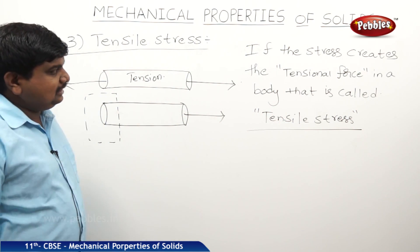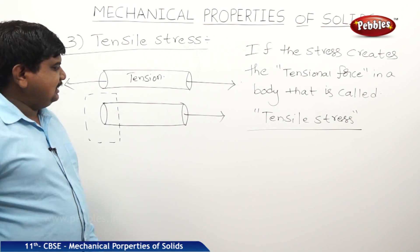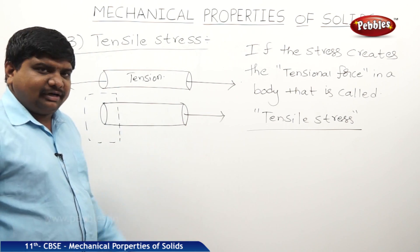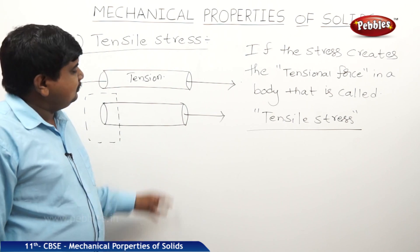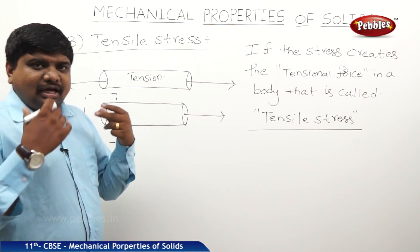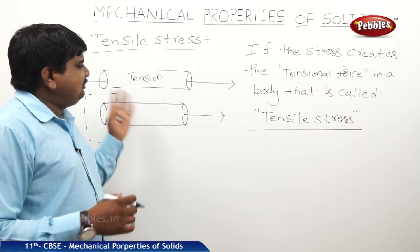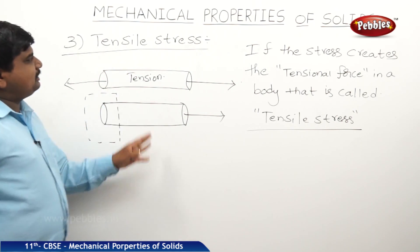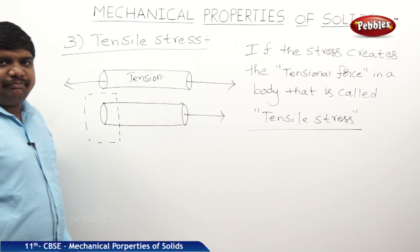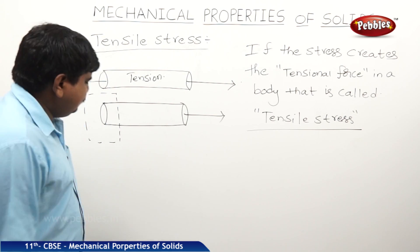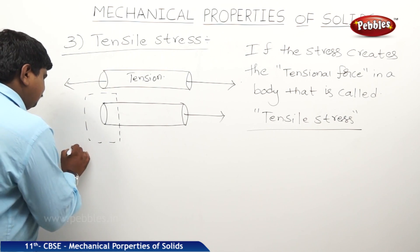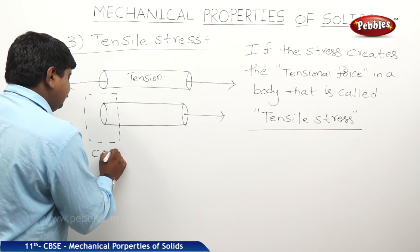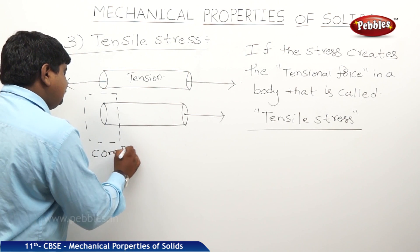Examples for tensile stress: a body which is fixed at one end and force applied on the other end, or a body with two opposite equal forces applied — those are the examples for tensile stress. The fourth type, which is exactly opposite to tensile stress, is compressive stress.